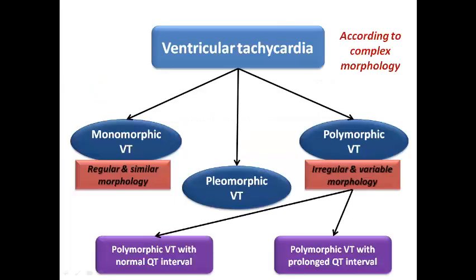We know the morphological types of ventricular tachycardia. We divided ventricular tachycardia in the last lecture into monomorphic VT, which shows regular and similar morphology, and polymorphic VT, which shows irregular and variable morphology. In polymorphic VT we have two subtypes: polymorphic VT with normal QT interval and polymorphic VT with prolonged QT interval. Polymorphic VT shows multiple morphology with continuously changing axis, whereas pleomorphic VT shows more than one morphology but not continuously changing.